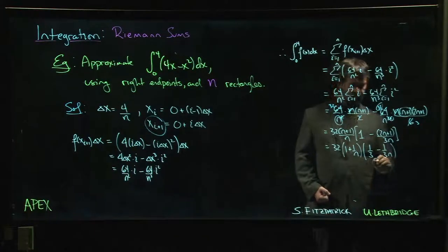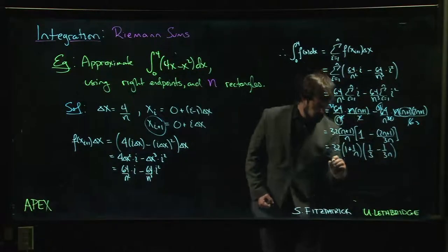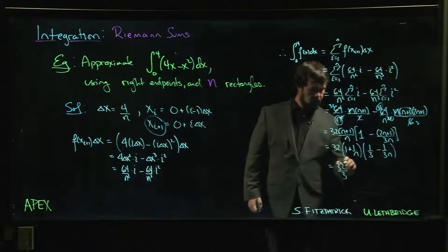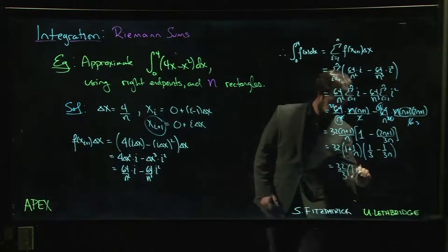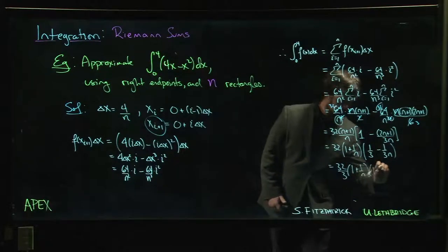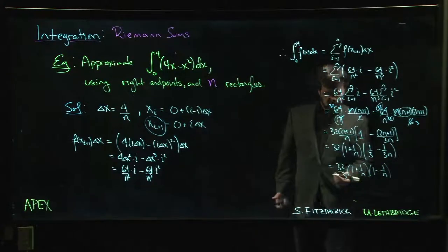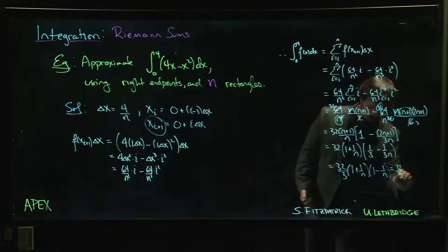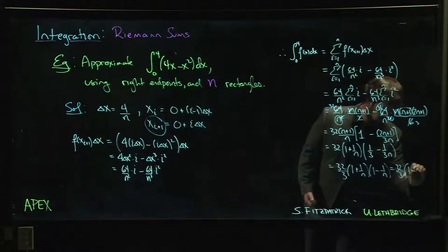And actually, if I factor out the 1 third, 32 over 3, I have 1 plus 1 over n, 1 minus 1 over n. That's the difference of squares. 32 over 3, 1 minus 1 over n squared.